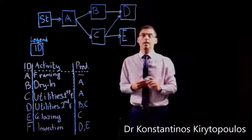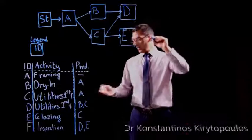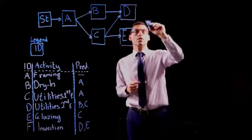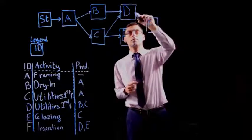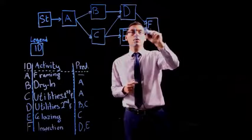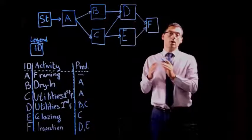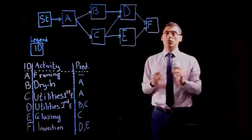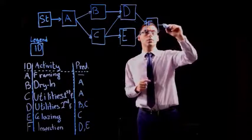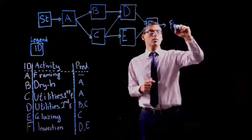The next activity would be activity F and F comes after D and E. So there you go. That's F. And before you say that I'm done, don't forget the milestone of the end of the project. So finishing milestone. There you go. I have another one that's finishing.